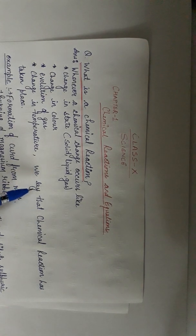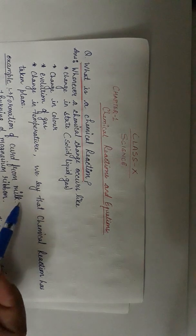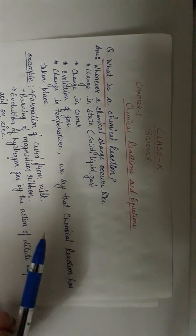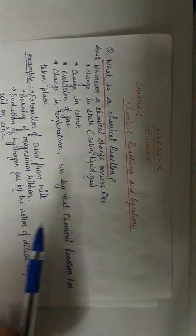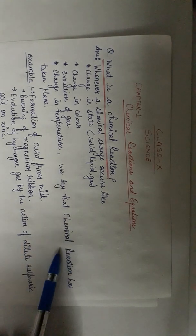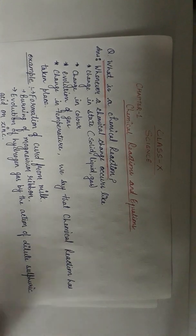Suppose milk is left at room temperature during summers. What happens? It changes into curd. Here, the identity of the initial substance, which is milk, has changed. Milk has turned into curd, so its chemical properties are also changed. Where chemical changes occur, chemical reactions take place.